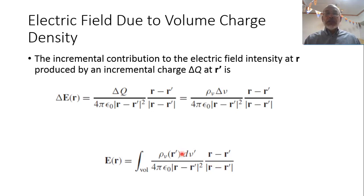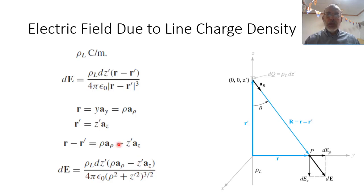This volume integration can be simplified for the case of surface charge density by integrating over a surface, and for the case of linear charge density by integrating over a line. As an example, we will study the electric field due to line charge density. Assuming we have a line charge density along the Z axis with charge density ρL — abbreviated L because it is linear — its units are coulombs per meter.